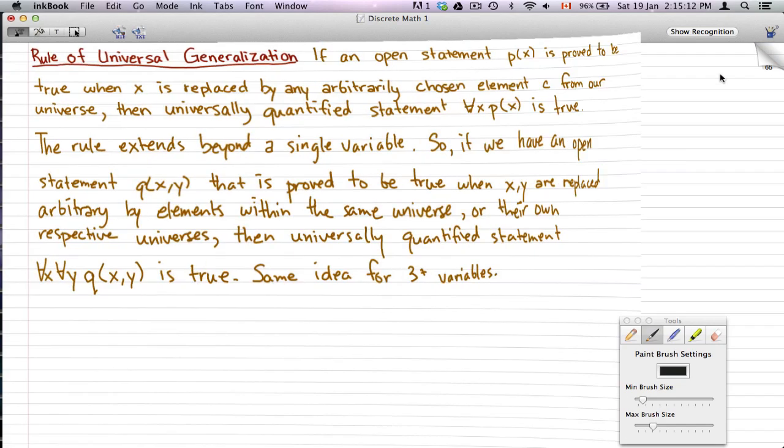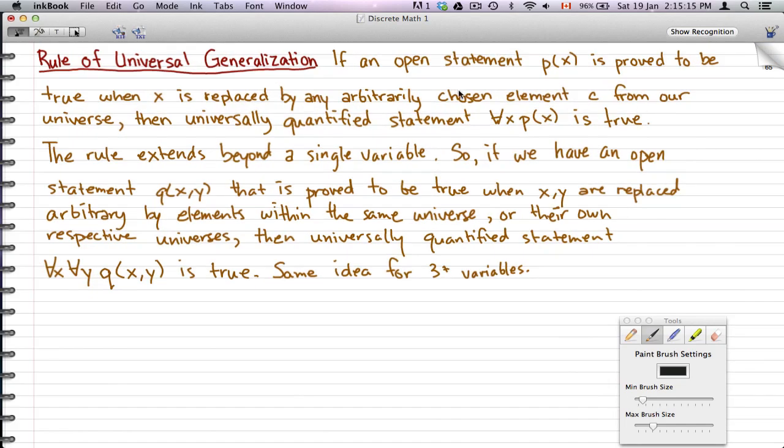Remember, the rule of universal generalization is that if we replace x by some arbitrary chosen element c from our universe, then universally that quantified statement ∀x p(x) is true.